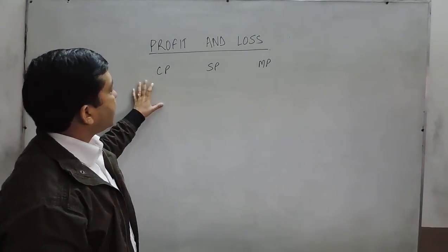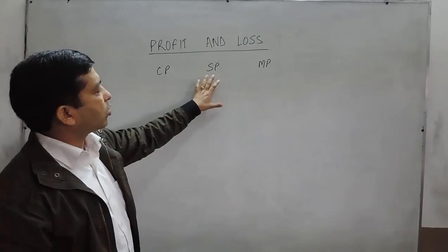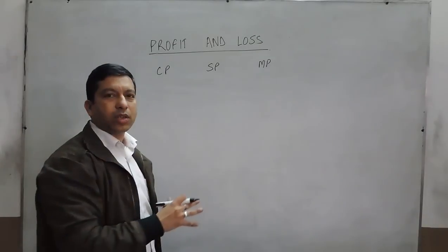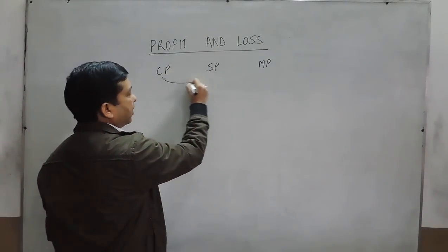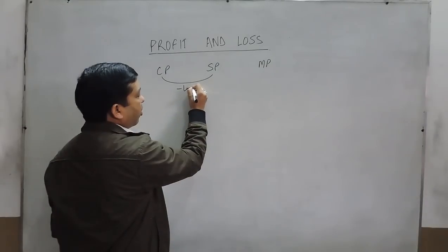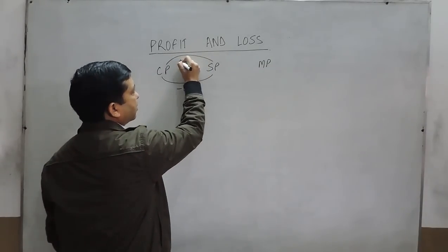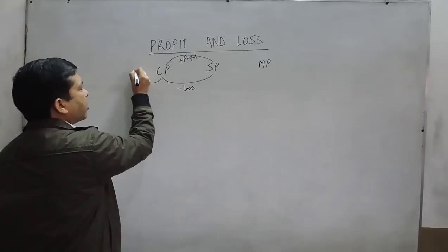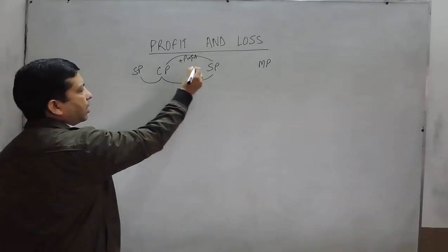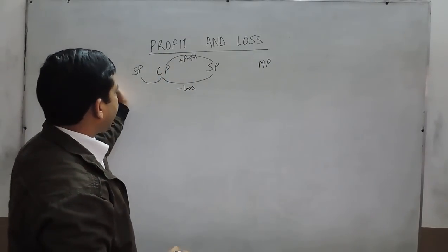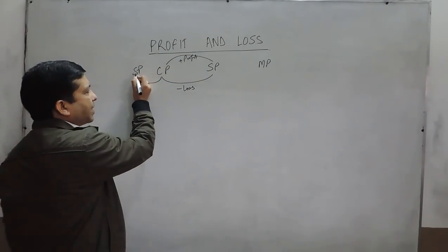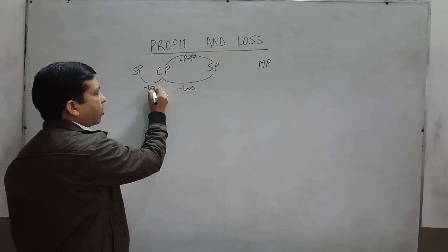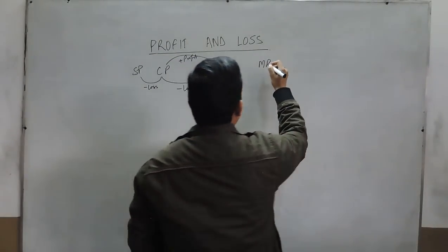Hello everyone. As in the first video, we discussed about cost price, selling price, and mark price. This chapter is solely based on these three terms. We already defined loss or profit — when it is a loss, the selling price is placed on the number line on this side, because when the selling price is less than the cost price, it is a loss.